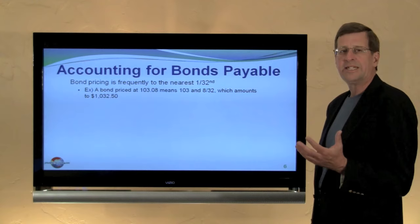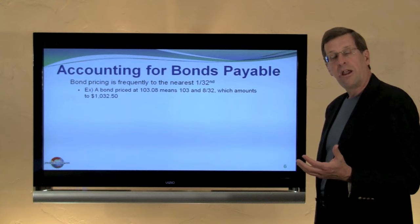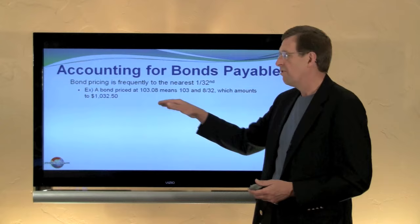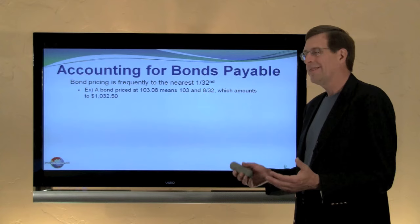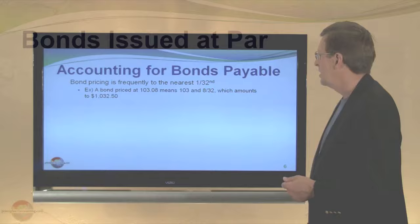By way of note, you might see a bond priced at 102, meaning 102% of par value, so a $1,000 bond would be priced at $1,020. Oftentimes you'll also see a price like 103.08. Bonds customarily price in 32nds, so 103.08 is not 103.08% — it's 103 and 8/32nds, which comes to a price of $1,032.50.